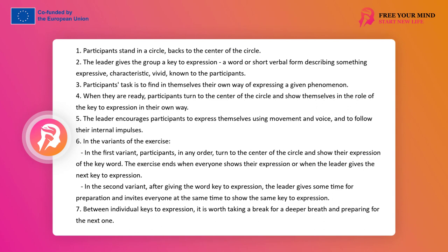Participants are tasked with finding their own way of expressing this phenomenon, and when they are ready, turn to the center of the circle and show themselves in a role — themselves in the quality of the expression key — in other words, show, for example, the wind, anger, sun, or love. The facilitator's task is to encourage participants to express themselves using movement and voice, as well as to follow their internal impulses in expression, allowing themselves behaviors consistent with their nature.